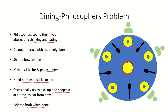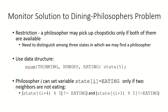The shared bowl of rice refers to the shared data set or critical section. Each philosopher is a process and the chopsticks are the resources or semaphores which control access to the shared bowl of rice. When we look at this problem using semaphores we saw that it led to a possibility of deadlock. So let's take a look at the monitor solution to the dining philosophers problem.